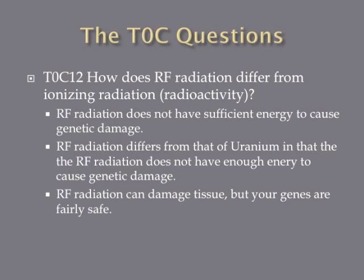How does RF radiation differ from ionizing radiation or radioactivity? RF radiation does not have sufficient energy to cause genetic damage. RF radiation differs from radioactive materials like uranium or plutonium in that it doesn't have enough energy to damage DNA. However, it does have plenty of energy to damage tissue and cause burns — but your genes are fairly safe. So RF radiation does not have sufficient energy to cause genetic damage.